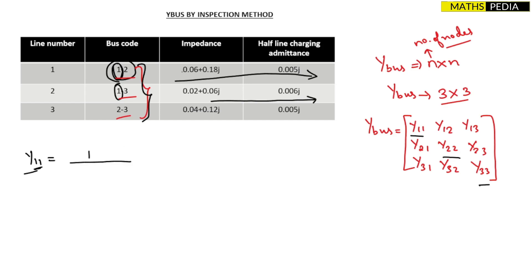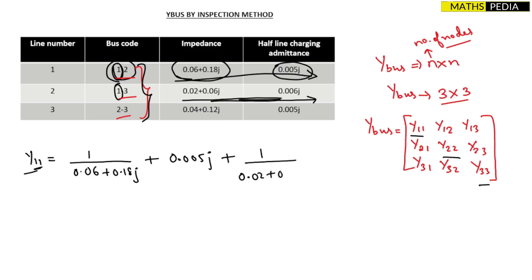Impedance is given, so convert to admittance by taking the reciprocal: 1/(0.06 + j0.18). Then add the half line charging admittance directly — it is already given as admittance, so just write 0.005j. For the second row associated with node 1: 1/(0.02 + j0.06) plus the half line charging admittance. The final answer for y11 is 6.67 − j19.89.